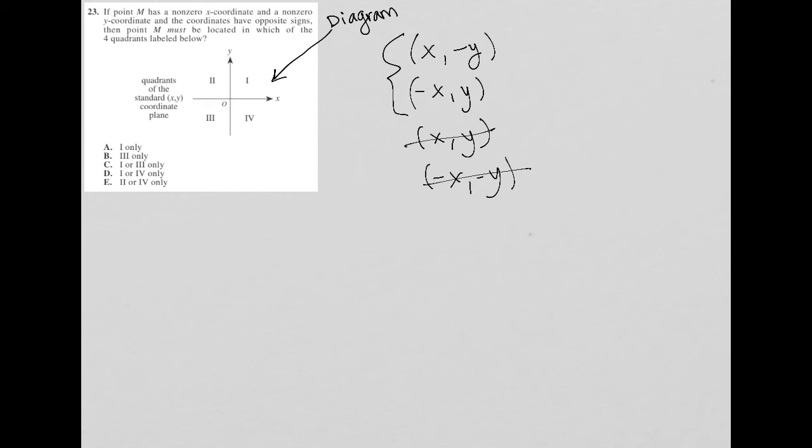Then point M must be located in which of the four quadrants labeled below? Well, if you are option one here where X is positive, that puts us on this side of the coordinate plane, and Y is negative, that puts us down here. So that puts us in quadrant four.